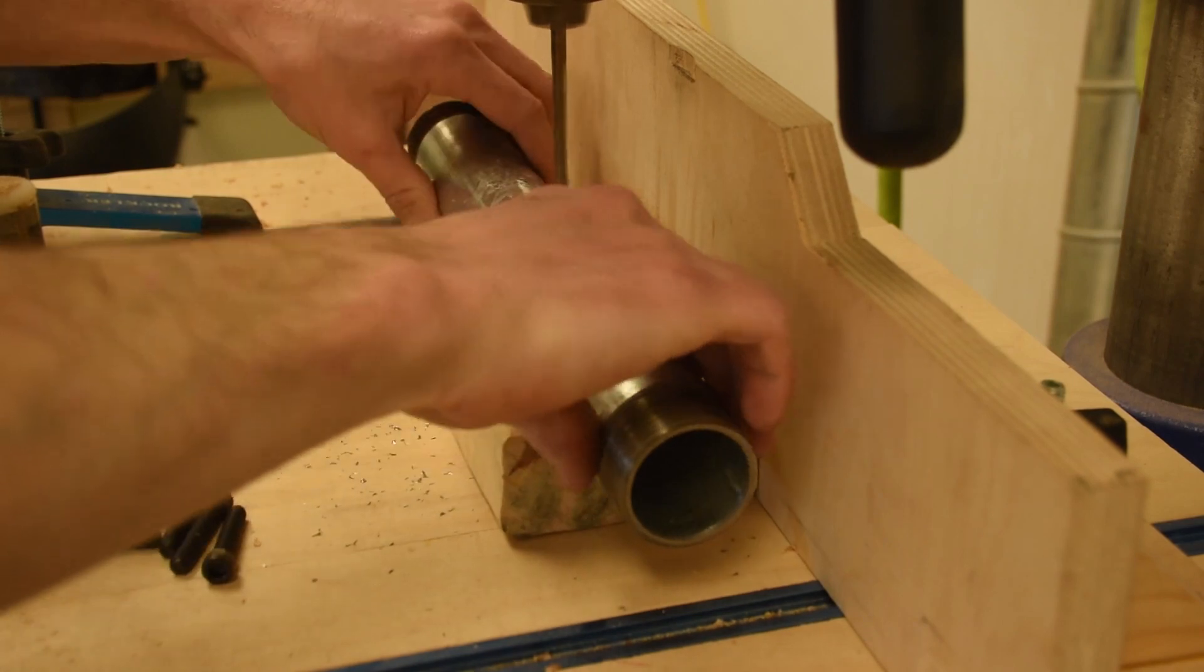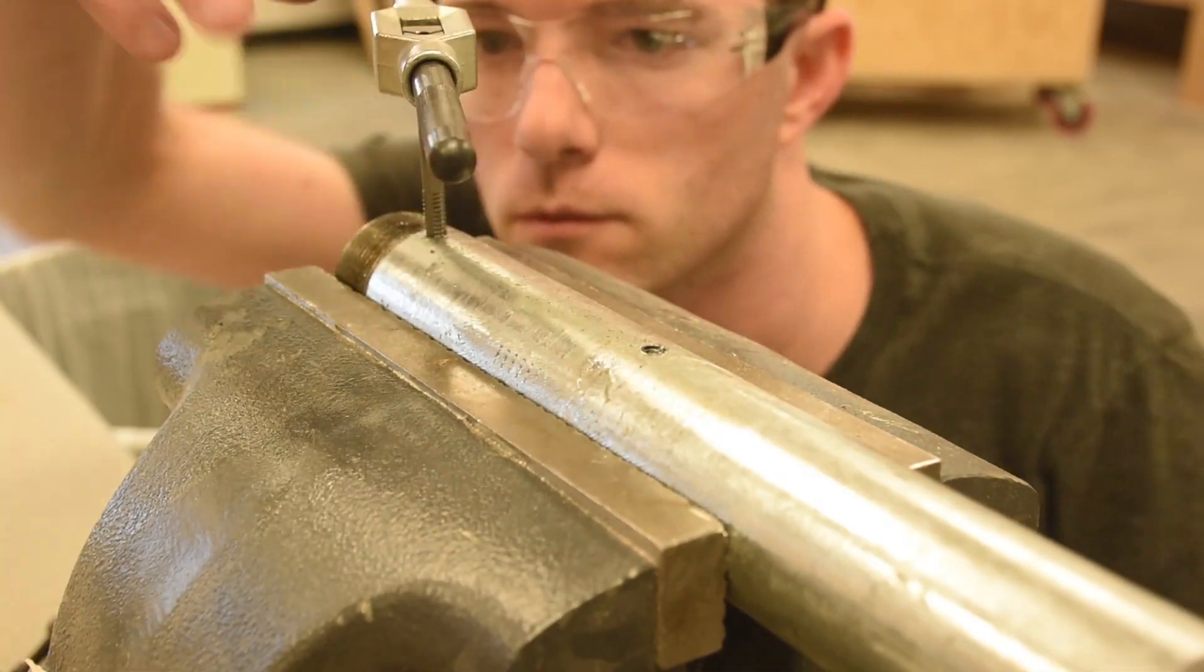Now I'm drilling each of the four holes in my V-Block with a number 7 bit so that I can thread them with a ¼-20 tap.